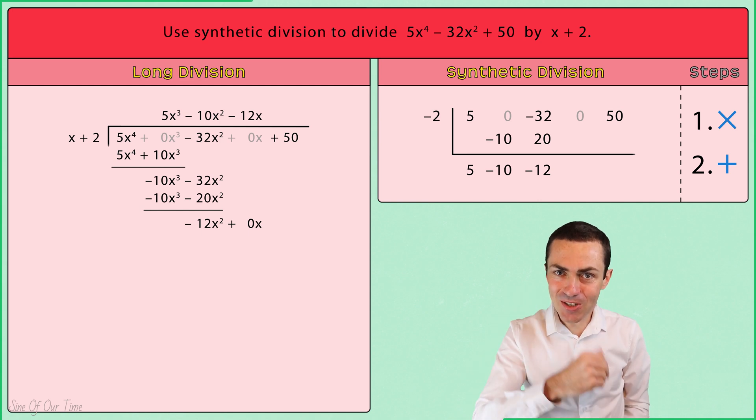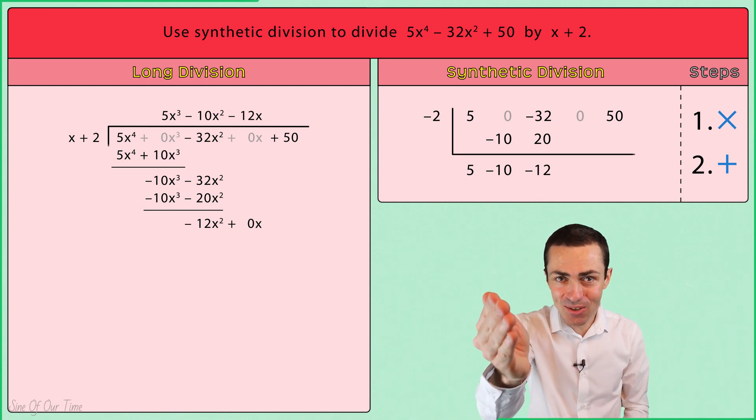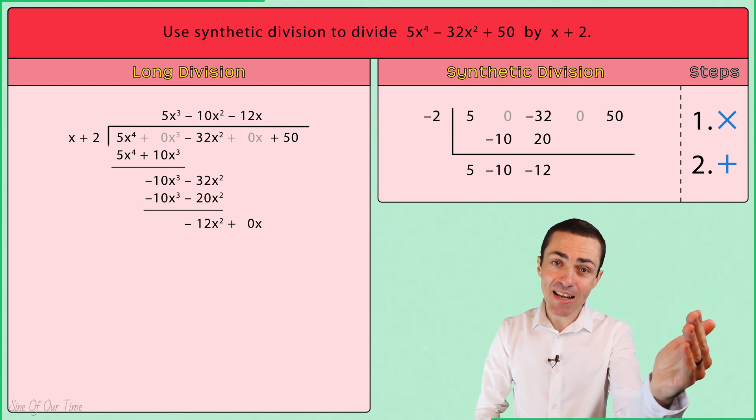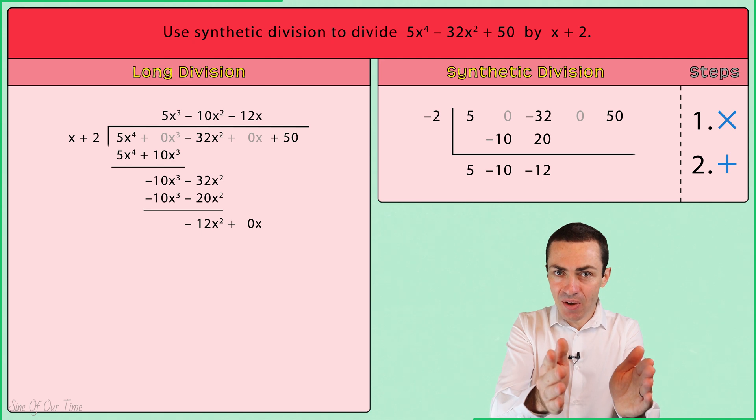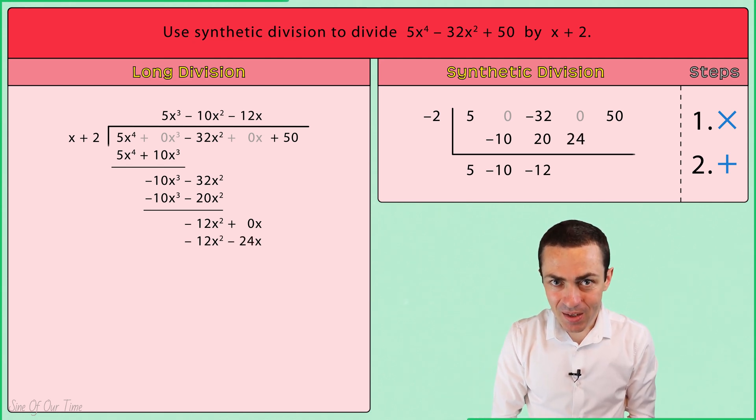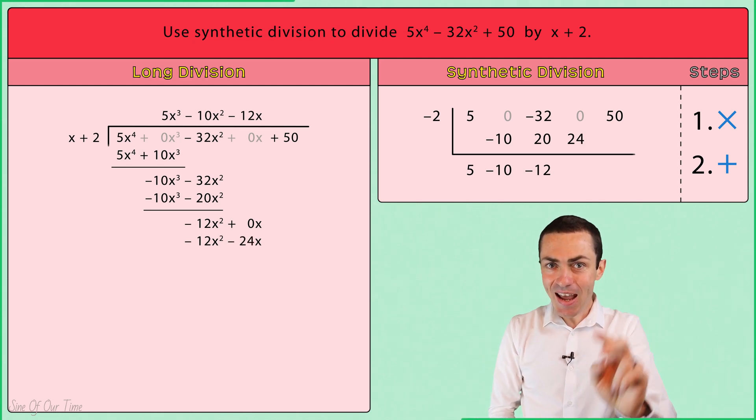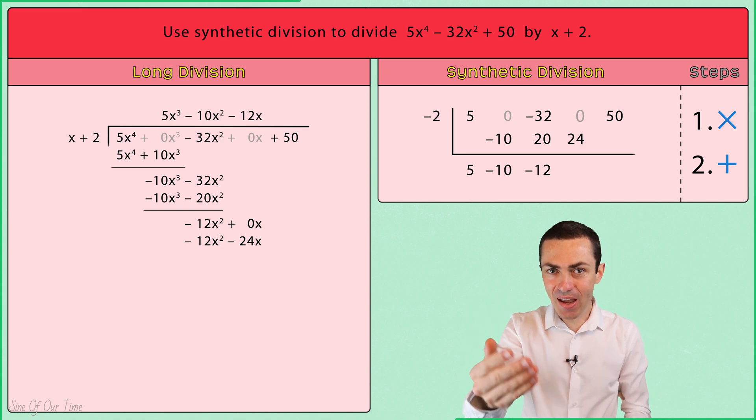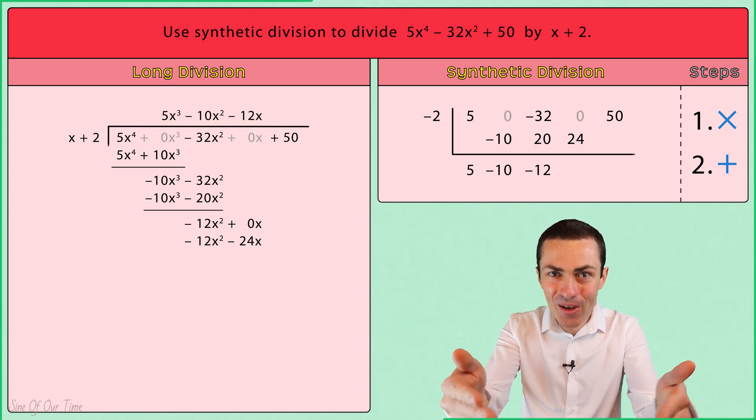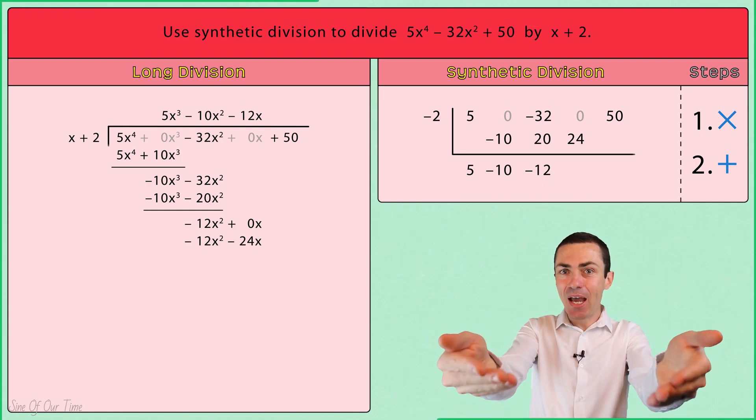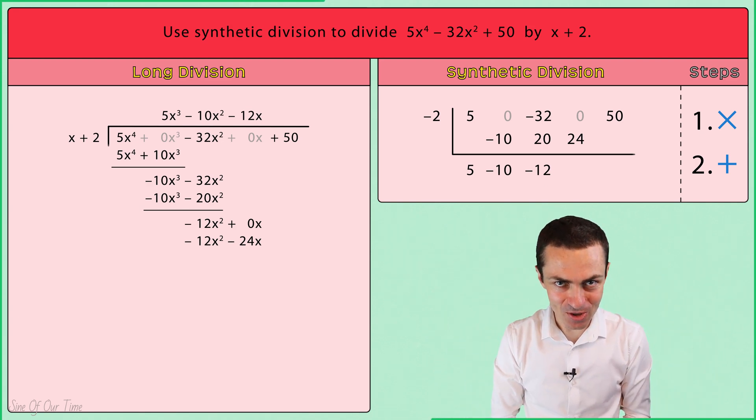Back to step one, multiply. We take that negative 2 and we multiply it by negative 12 in order to give us positive 24, which we write one column over beneath the zero. Then step two, add. We take 0 and we add 24 to give us 24, which we keep in the same column below the synthetic division symbol.